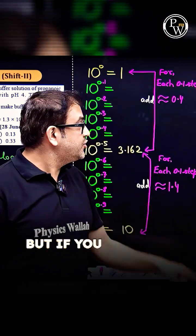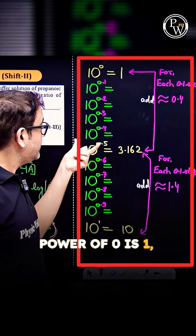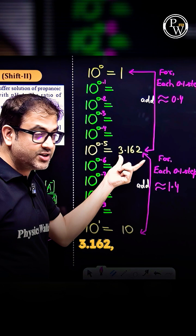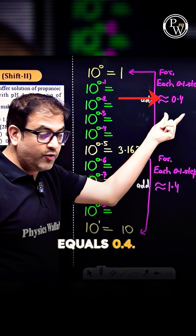But if you just go by basic principles: 10 raised to the power 0 is 1, 10 raised to the power 0.5 is 3.162. Divide it into 5 steps, each step approximately equals 0.4.